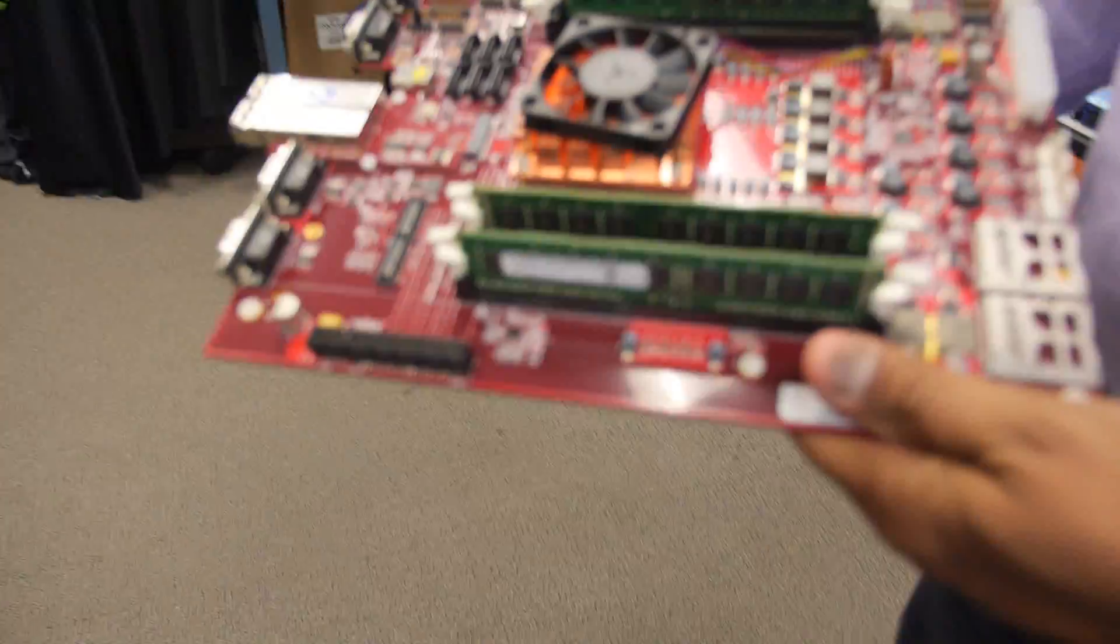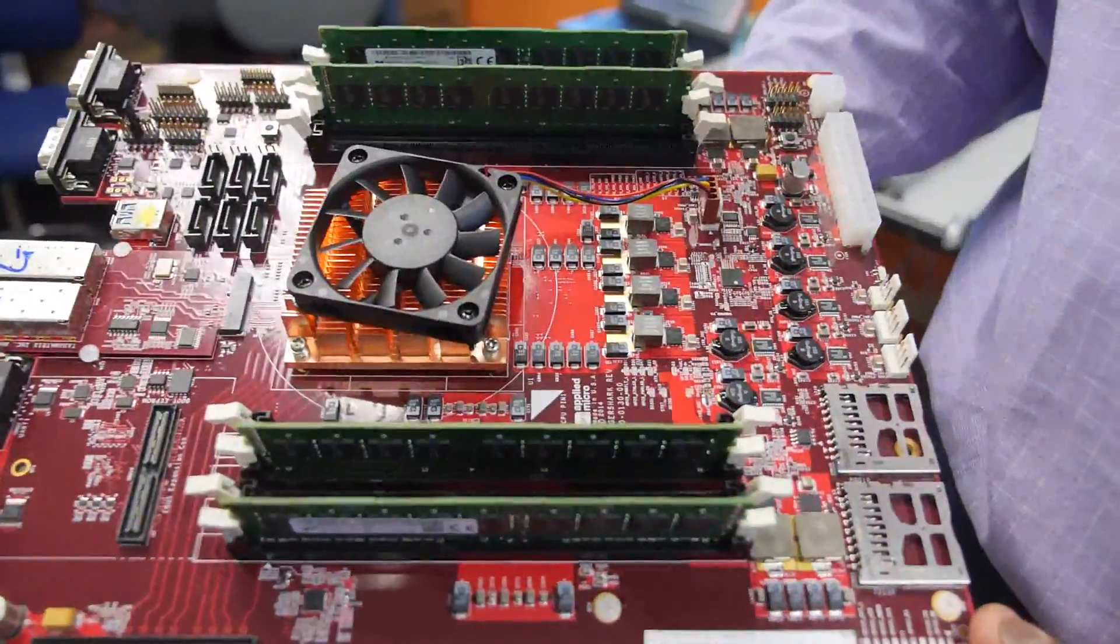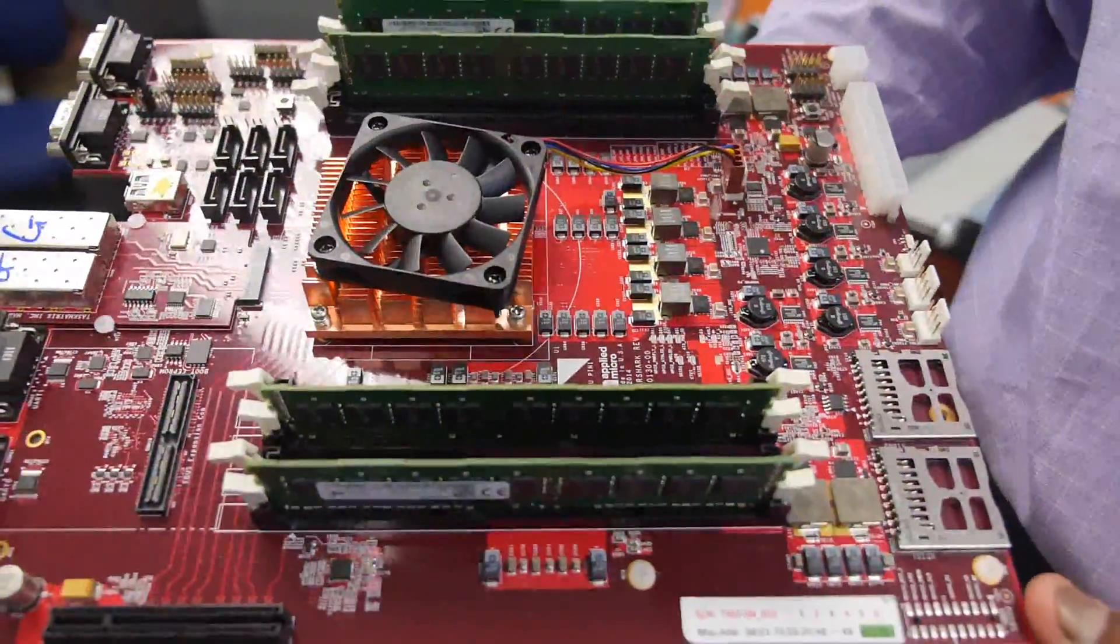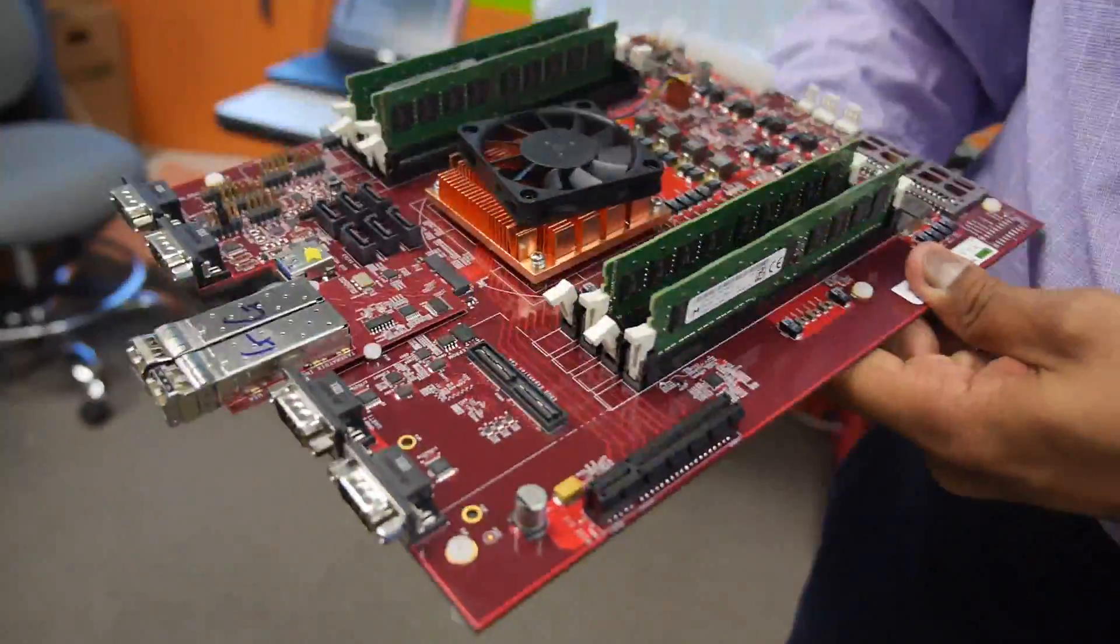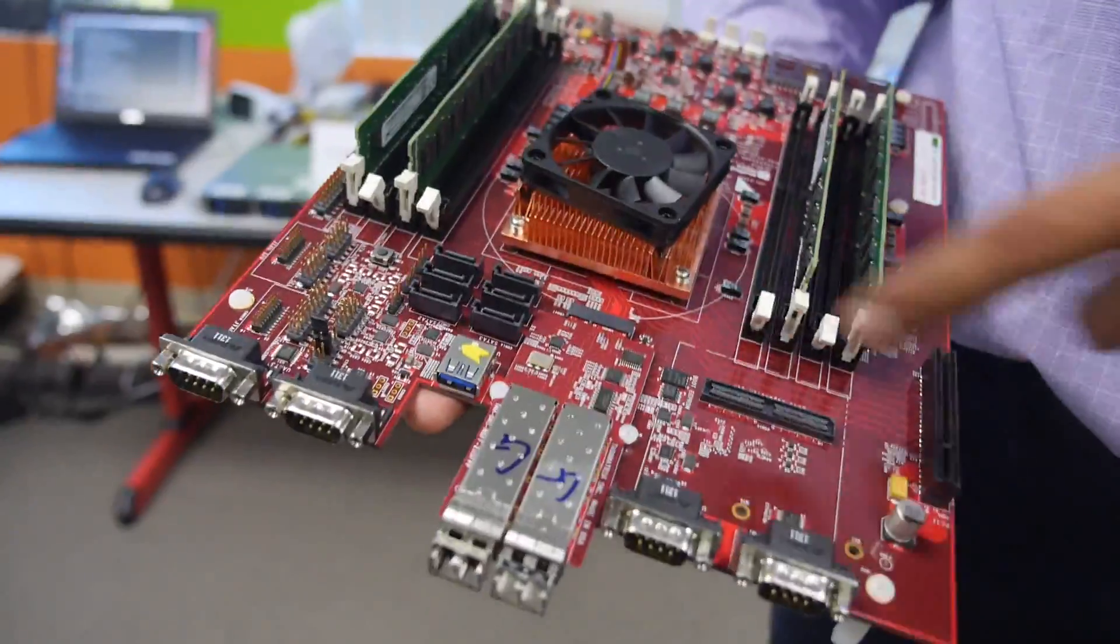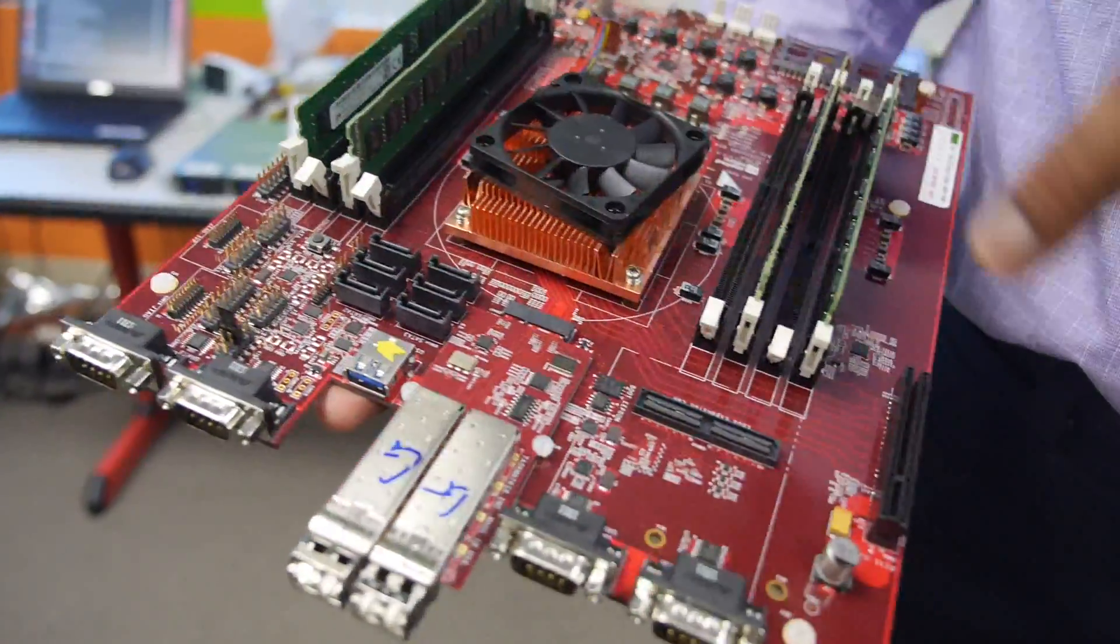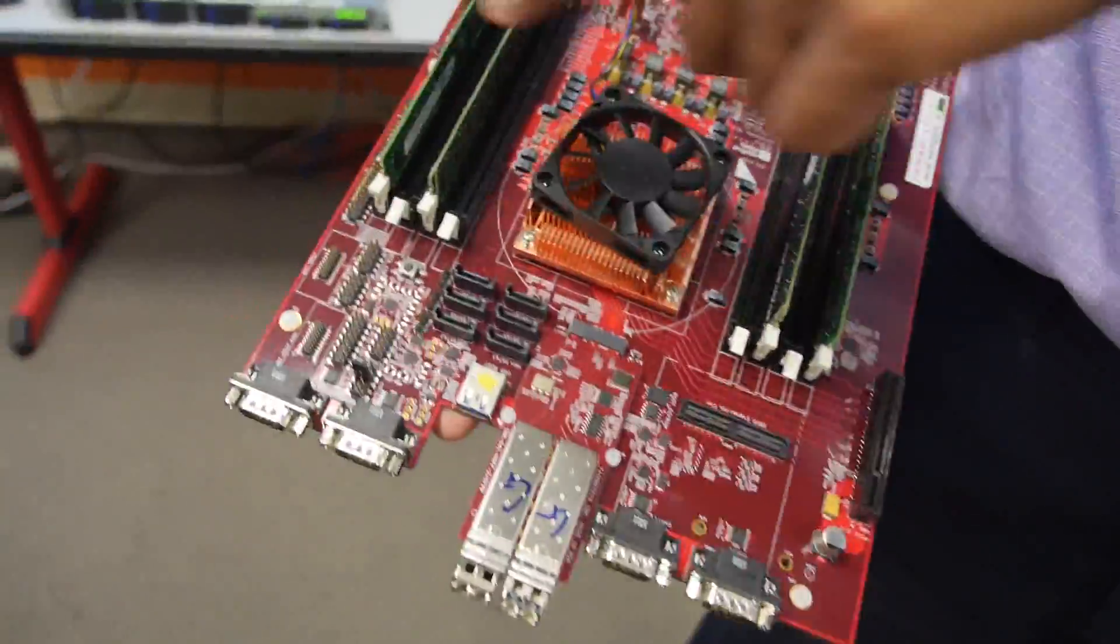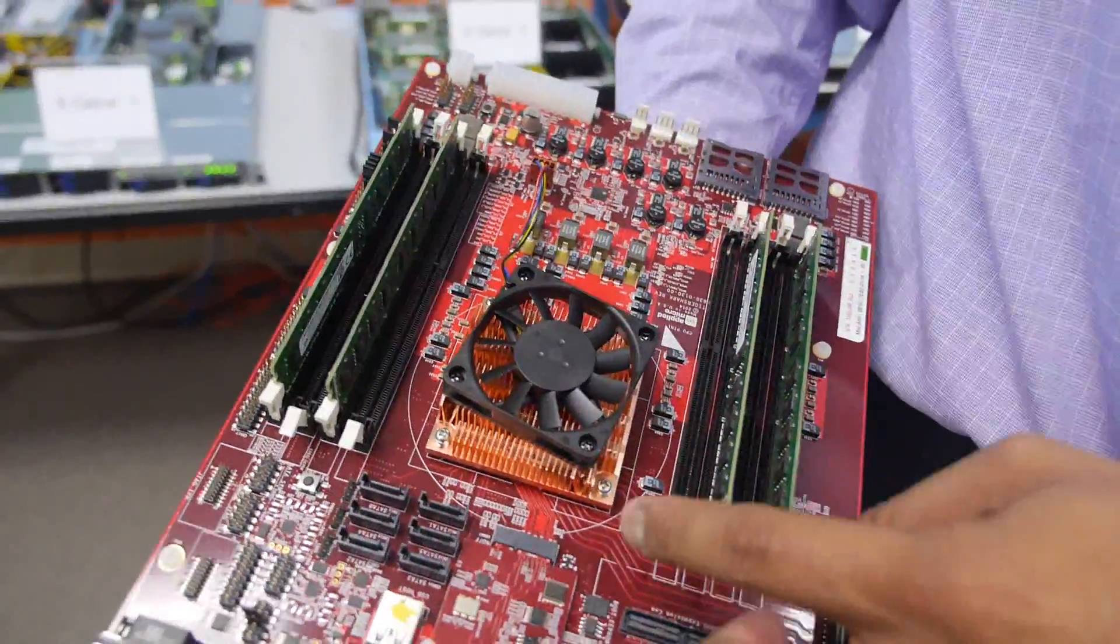This is the X-Gene 2 based evaluation board that we use internally for bring up. This brings out all the interfaces on the X-Gene 2 platform. On the front panel, we see four UART connections and two 10 gigabit Ethernet that are integrated into one single SoC. You see the four DDR channels here, so there are eight slots total, two DIMMs per channel, eight DIMMs total.